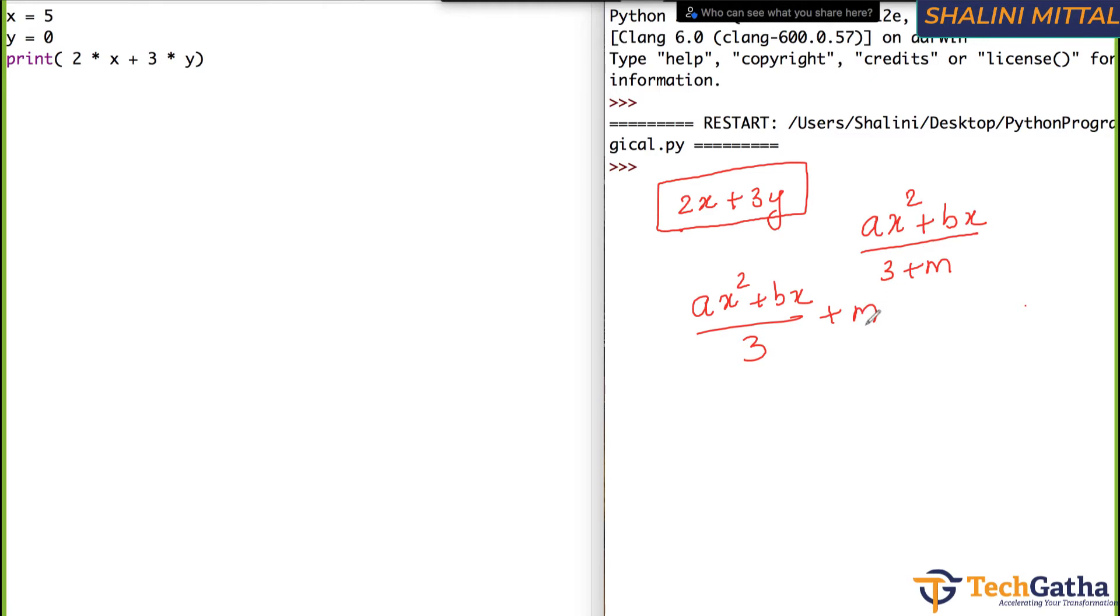These two are different. So you have to remember that when it's a division by whole, the brackets makes importance. So if I write here, I say a is equals to 1, I say b is equals to 2.